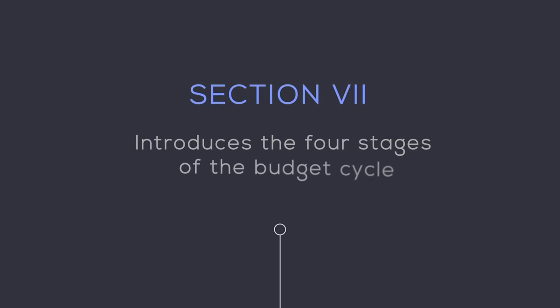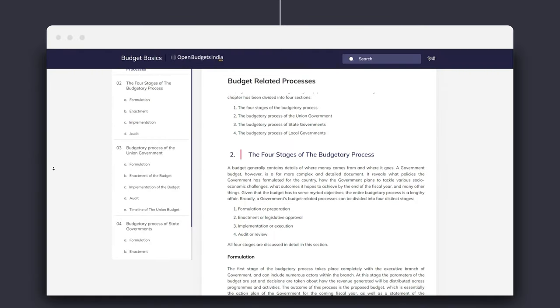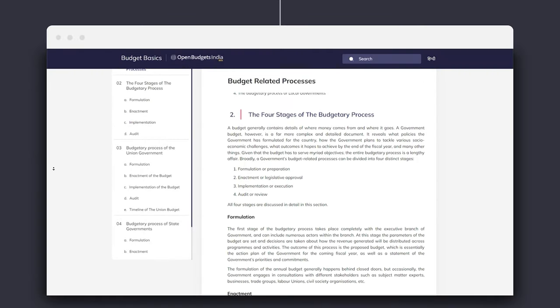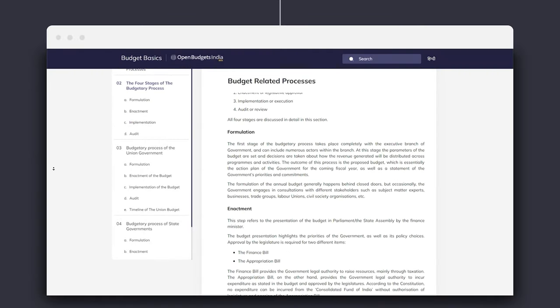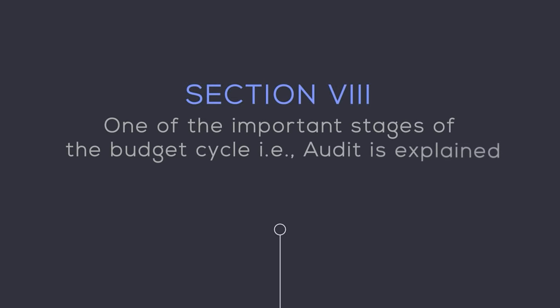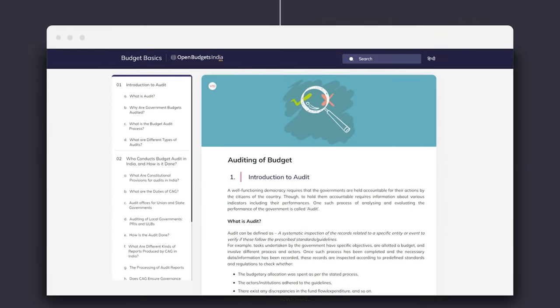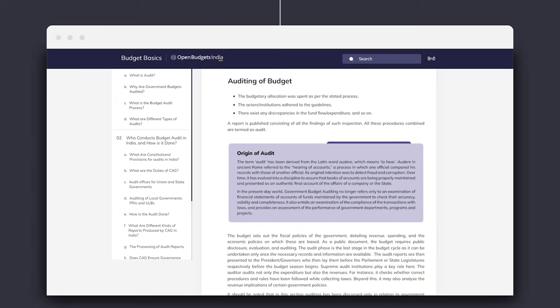Section 7 introduces the four stages of the budget cycle and how they are carried out at the levels of union and state governments. Section 8 provides information pertaining to concepts, processes, and actors involved in one of the important stages of the budget cycle, i.e., audit.